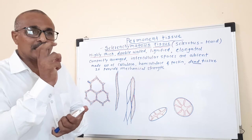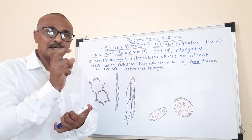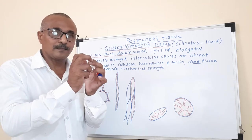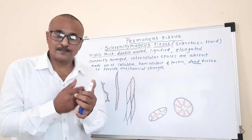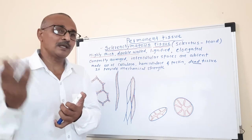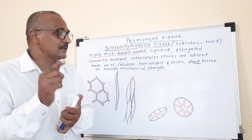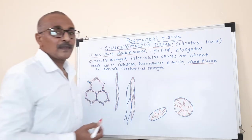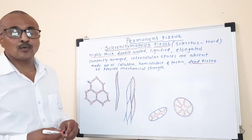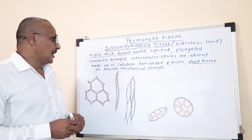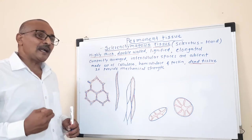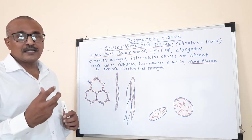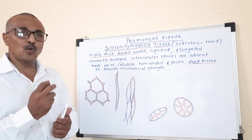Due to the deposition of pectin as well as lignin, the cell lumen becomes very narrow. The cavity in the sclerenchymatous cells becomes very narrow, and sometimes the protoplast of the cell is lost. Hence, sclerenchyma is a dead tissue, because the protoplast is lost. Because of such a hard and lignified nature, the sclerenchymatous cells provide mechanical support to the plant.